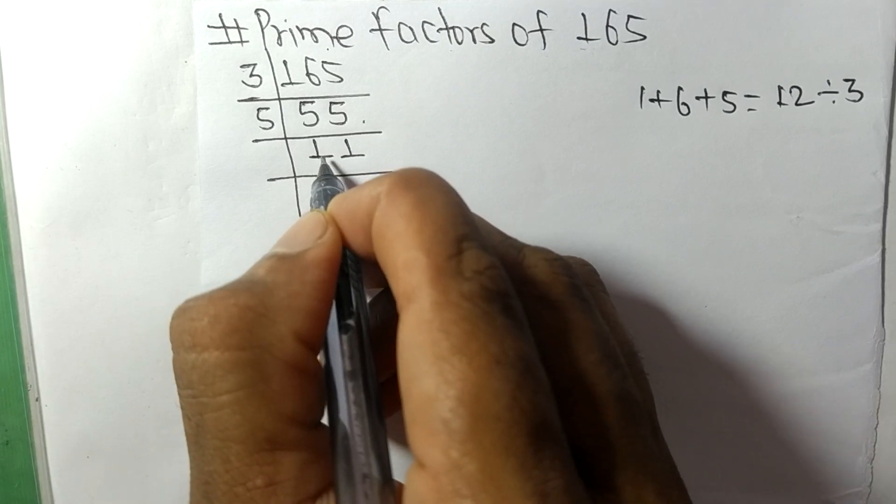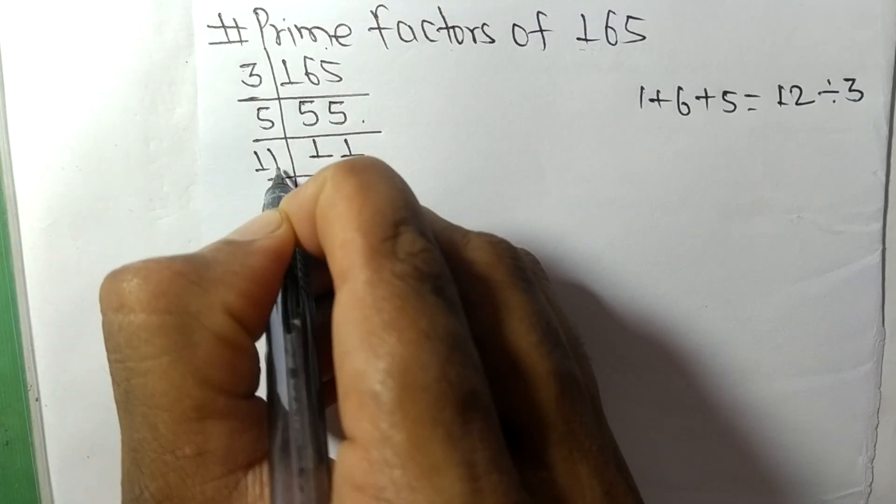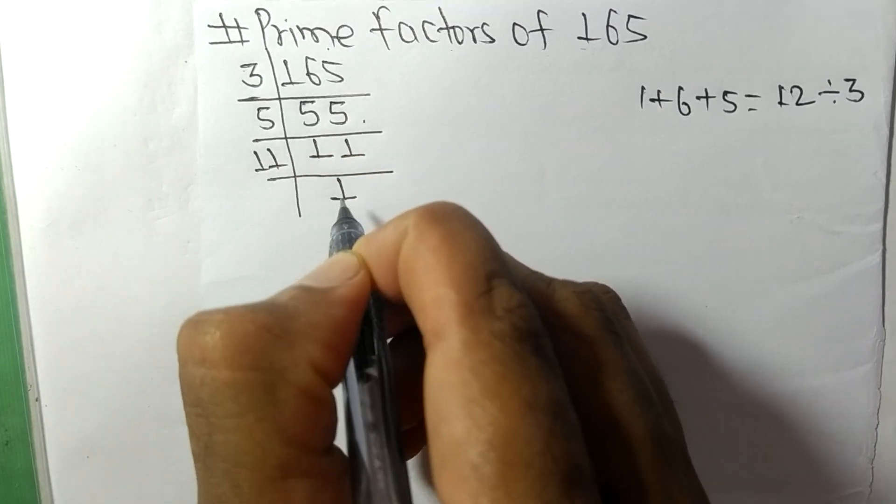11 is a prime number, so it is divisible by 11 itself, and we get 1.